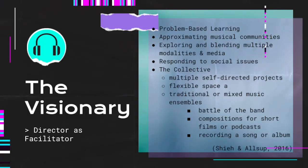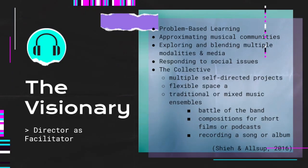It all seems so abstract. This is a big part of the visionary — it requires thinking about schooling in a different way, especially in the context of an ensemble. Some possible examples might be using problem-based learning, approximating musical communities found outside of school in the school music setting, exploring and encouraging students to blend multiple modalities and mediums, responding to social issues, or the wildly imaginative idea of the collective — when the music classroom becomes a flexible space where multiple self-directed projects happen simultaneously, mixing performance, digital and print work, recording and video. Examples include preparing for a Battle of the Bands, student compositions for short films or podcasts, and recording or producing a song or album.